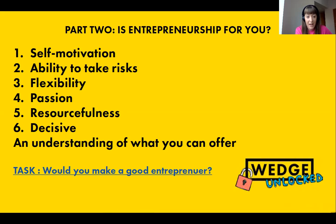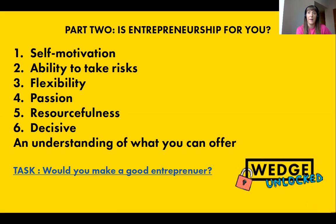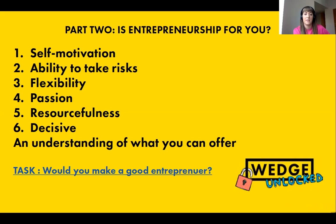Number five: resourcefulness. When I mean this, I think about something we say a lot — there are no problems, only solutions — meaning there's always a solution, you just have to find it. That might mean being very resourceful, looking for an unusual way to solve a problem. Number six: being decisive. This is something you can definitely work on — it's something I've really struggled with in the past. What's good about Wedge Collective is that Jodie and I run it together, so we've got each other to bounce off and help make decisions. But if you're running a business alone, all of the decisions are 100% yours, which can be a little bit overwhelming.